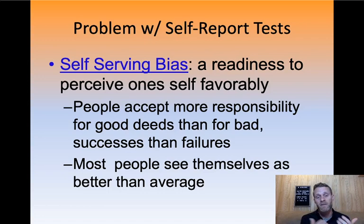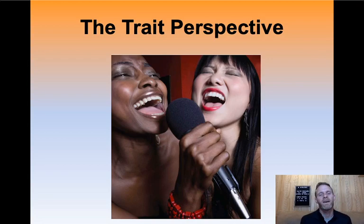That all feeds into the self-serving bias. When it comes to the trait perspective and taking these self-inventories, it does hurt that most people see themselves as a little better than average. We're going to dive into the trait perspective next time — things like the CANOE acronym, C-A-N-O-E, and things like the Myers-Briggs test, which we took in AP psychology. We'll get into that next time, which will be next week.